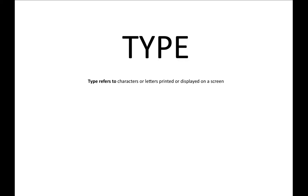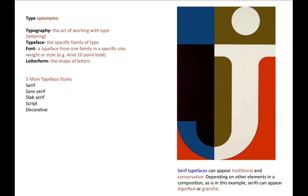Type. Type refers to characters or letters printed or displayed on a screen. Synonyms for type: Typography — the art of working with type. Typeface — the specific family of type. Font — a typeface from one family in a specific size, weight or style. For example, Arial ten point bold.